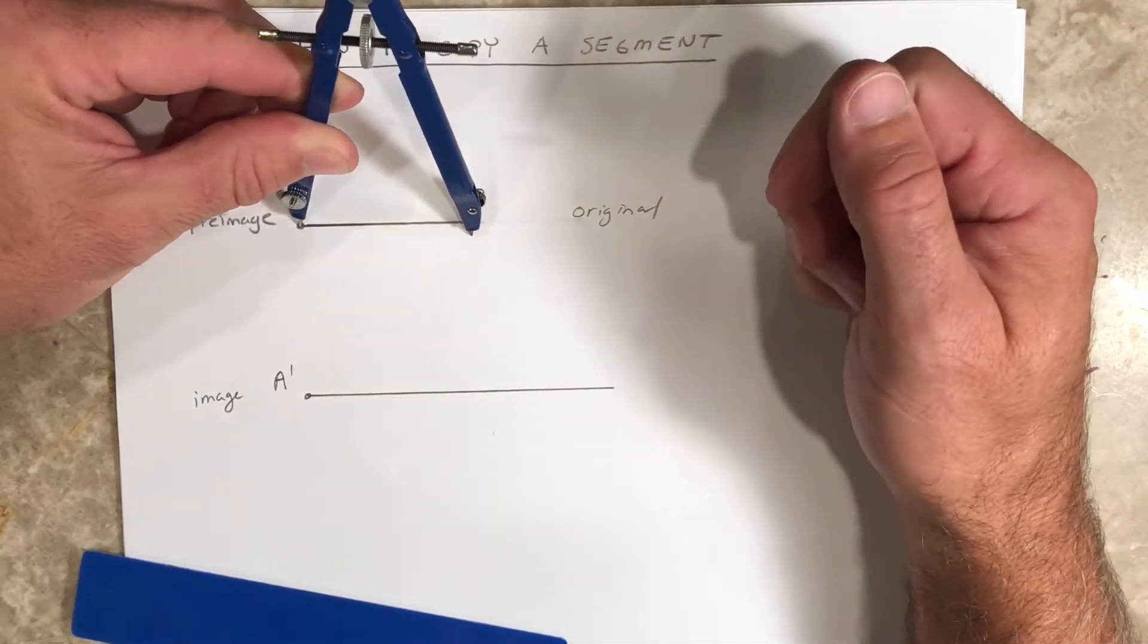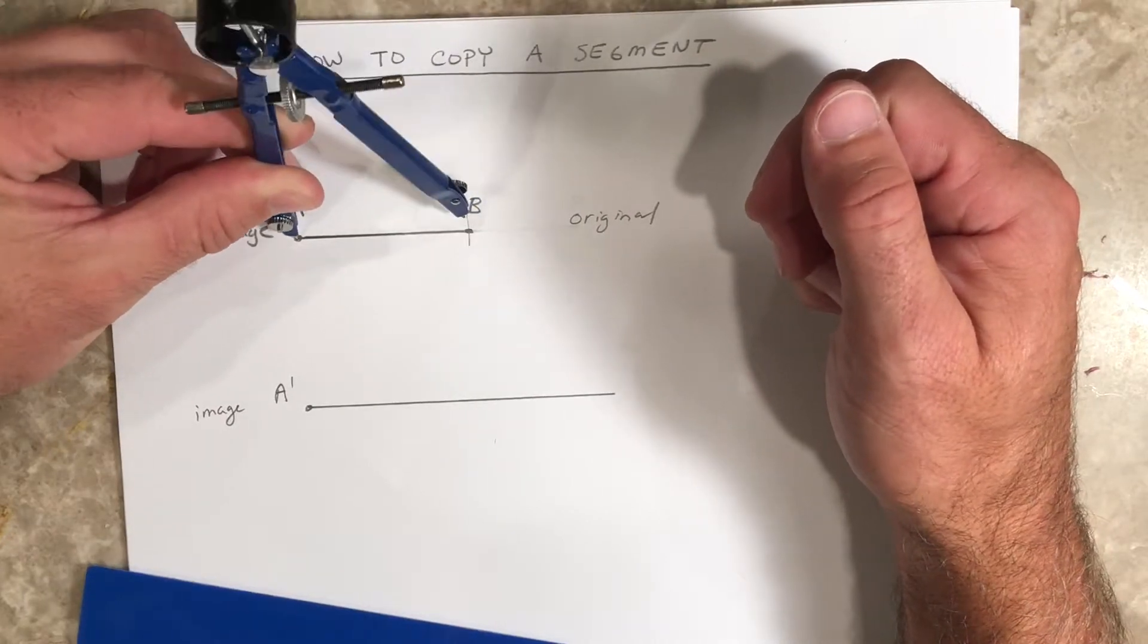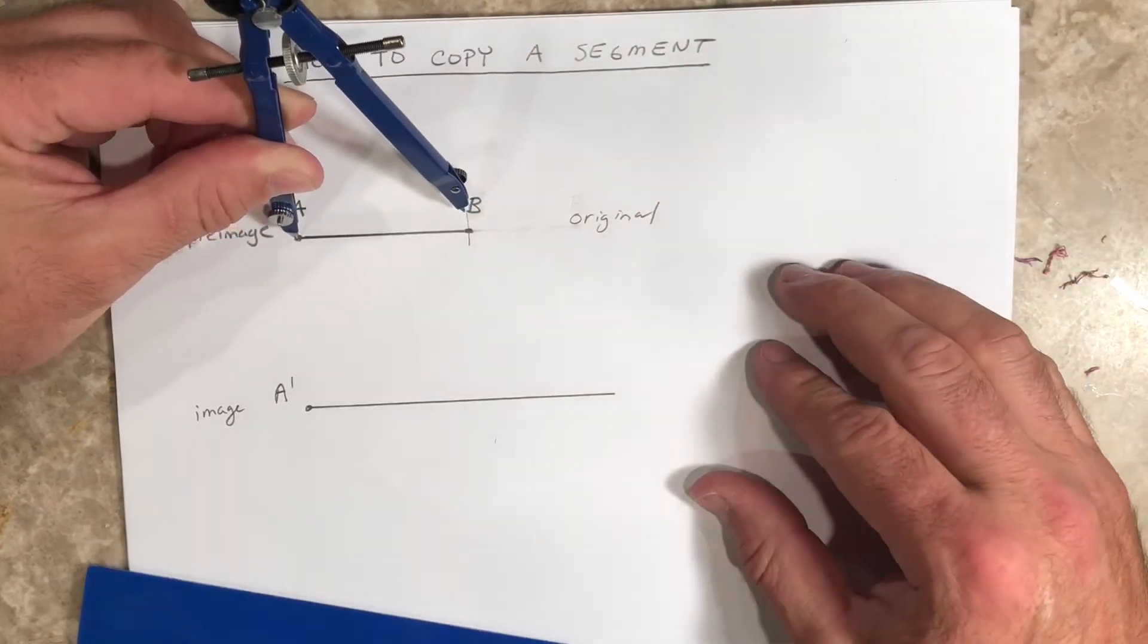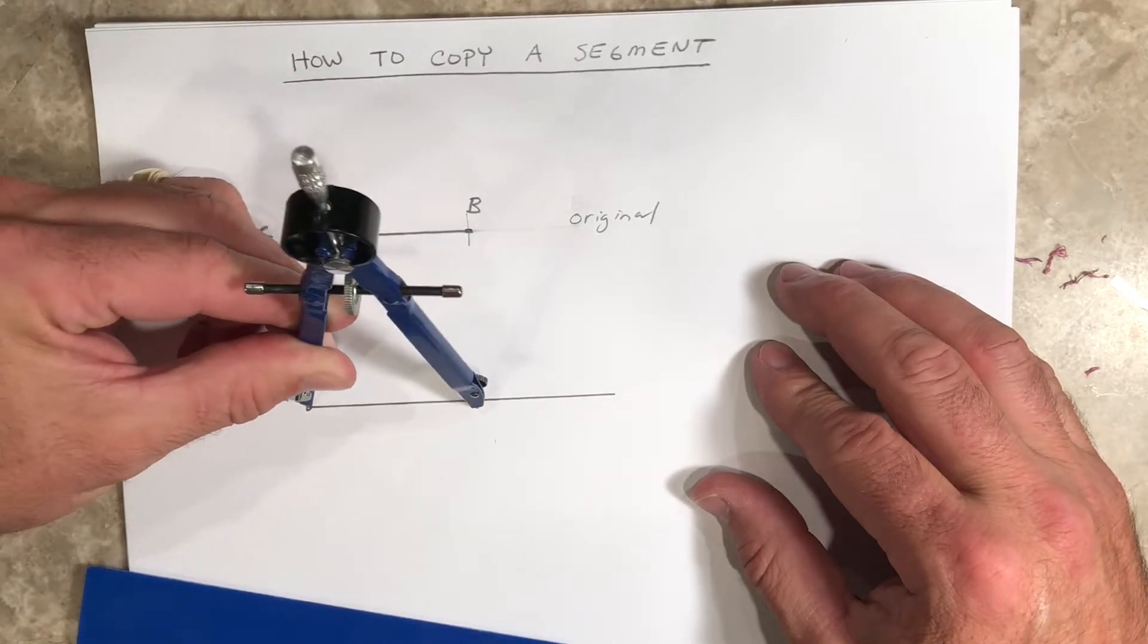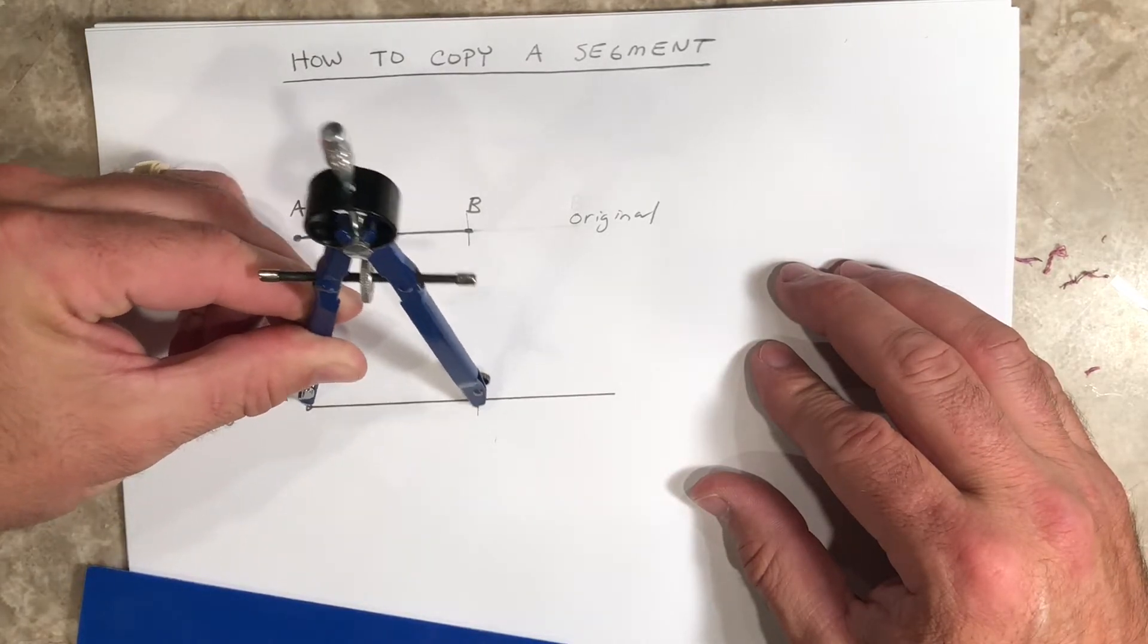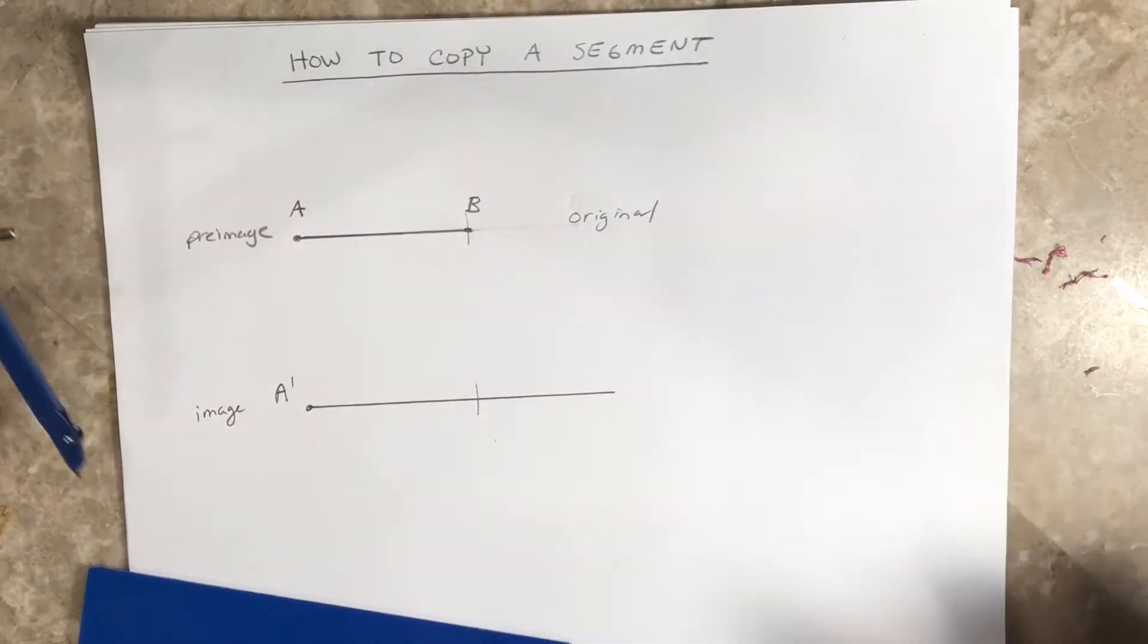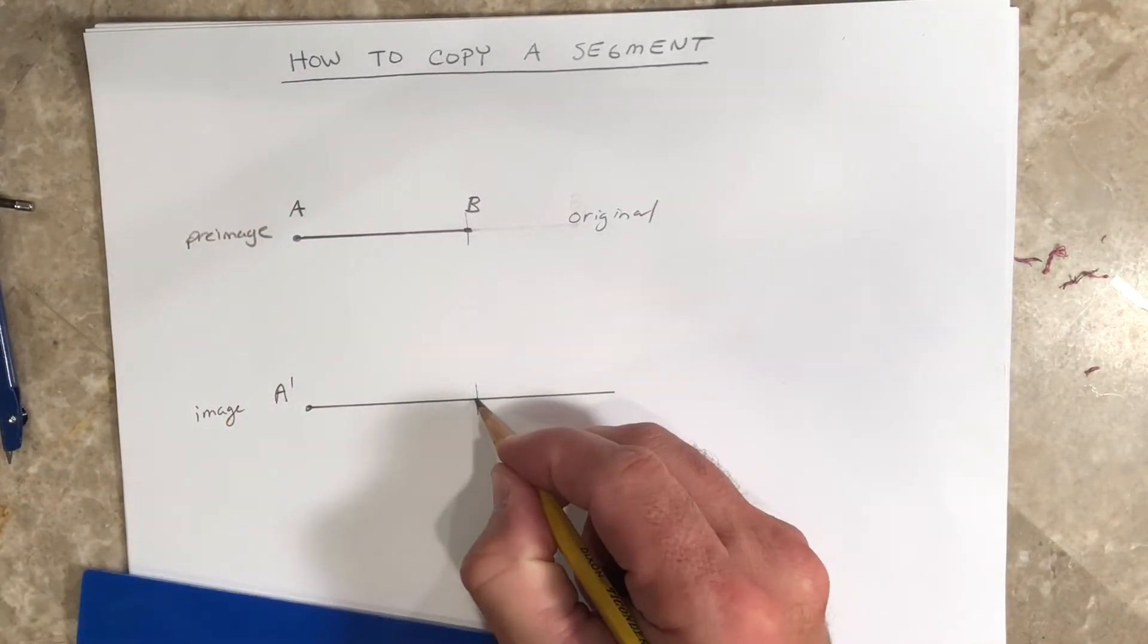And just lightly swing it to make sure that it intersects at the right spot. And now you're just going to bring your compass down, put it on A', and then you swing your compass right there. And now you got your new point.